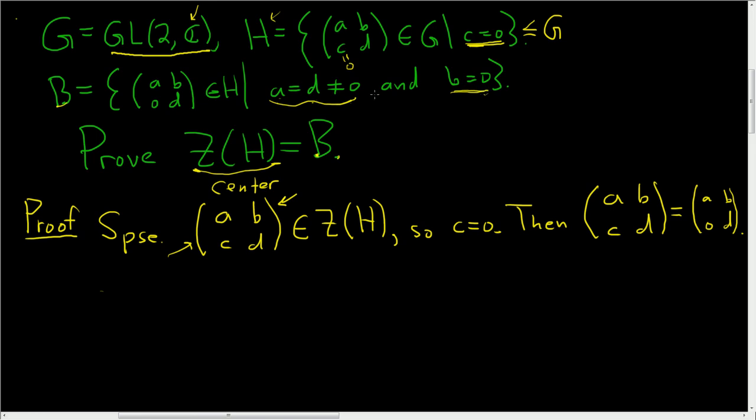Note: if you take the determinant of (a, b; 0, d), you just get ad. And because the center is a subgroup of the general linear group, it's invertible. All these matrices are invertible here.